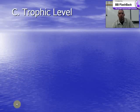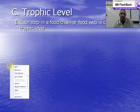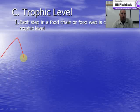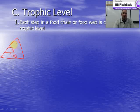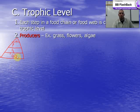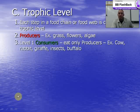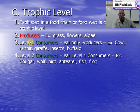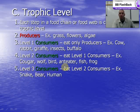To summarize trophic levels: each step in an ecosystem is a trophic level — levels 1, 2, 3, and 4 in a pyramid. 100% of energy starts at the producers, and only 10% is passed up to each level. Level 1 consumers are just above producers; level 2 consumers eat level 1 consumers; level 3 consumers eat level 2 consumers. Typically we end at 3 levels.